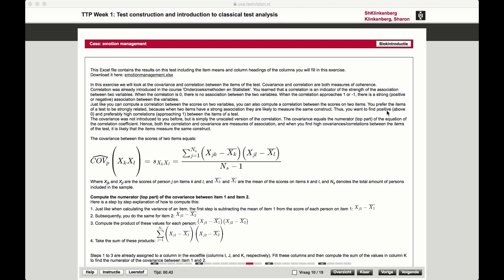In this video we're going to calculate the covariance of two items, item K and item L. Here we use K to denote a specific item and L to denote a different item.